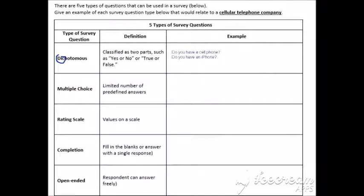We use multiple choice. So limited and number of predefined answers. So we can say, what is your primary use for your cell phone? And we can go A, internet, B, calling. C, apps. D, we'll put other.